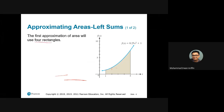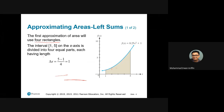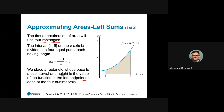We're going to use four rectangles, because we have from one to five — there are four sub-widths of one each. So if we divide this interval into four equal parts, the width of each rectangle would be one. We're going to place each rectangle whose base is the sub-interval with width one. The height will be the value of the function at the left endpoint on each of the four rectangles.